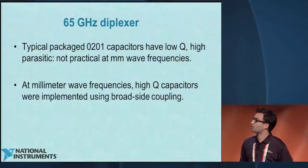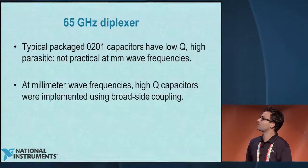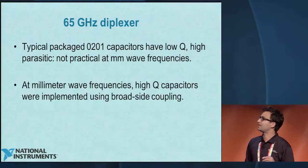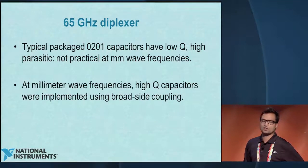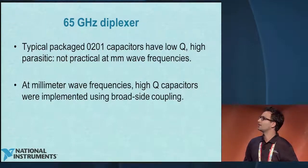Now moving to the 65 gigahertz diplexer. For 65 gigahertz, the 0201 package capacitor is impractical because the Q of the capacitor is low and it has too much parasitic — it's really impractical to model all the way to 65 gigahertz. Instead, we use broadside coupling, which acts like an air gap capacitor. I'll talk about how I model it.